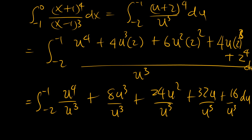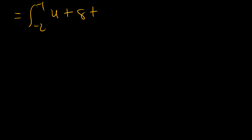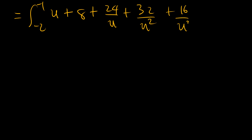Simplifying each term, this becomes the integral from u equals negative 2 to negative 1 of: u, plus 8, plus 24 over u, plus 32 over u squared, plus 16 over u cubed. Now, special notice here — I don't want to deal with logs and negative functions together, so I will create two separate integrals.